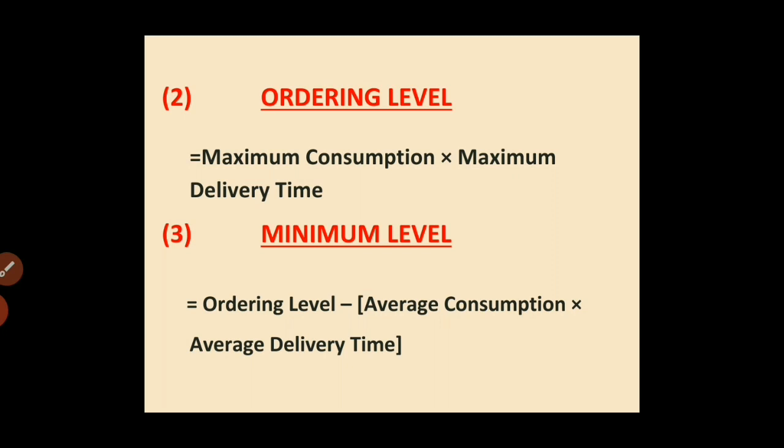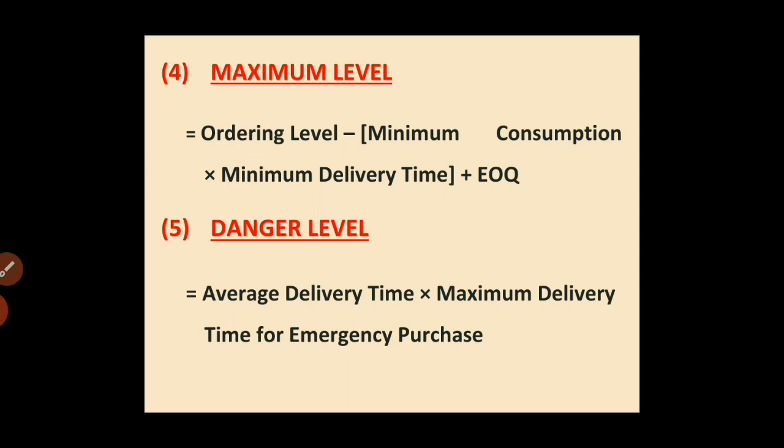Important clarification: minimum level and minimum consumption are different things. Maximum level and maximum consumption are different. Average level and average consumption are all different. Level means the quantity you decide; consumption means the usage. Formula number four: Maximum Level equals to ordering level minus (minimum consumption multiplied by minimum delivery time) plus EOQ.